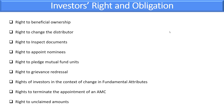The right to terminate the appointment of an AMC exists in three cases: whenever required to do so by SEBI in the interest of unit holders; whenever required to do so by 75% of the unit holders passing a resolution; and when trustees decide to wind up or prematurely redeem the scheme — in which case 75% of unit holders' approval is required. Trustees are bound to obtain the consent of unit holders whenever required by SEBI in the interest of unit holders.